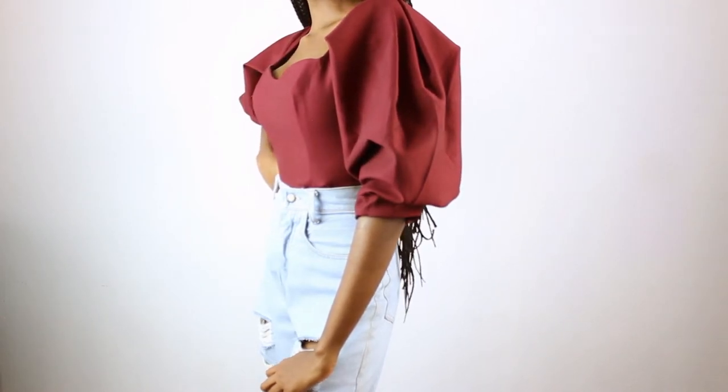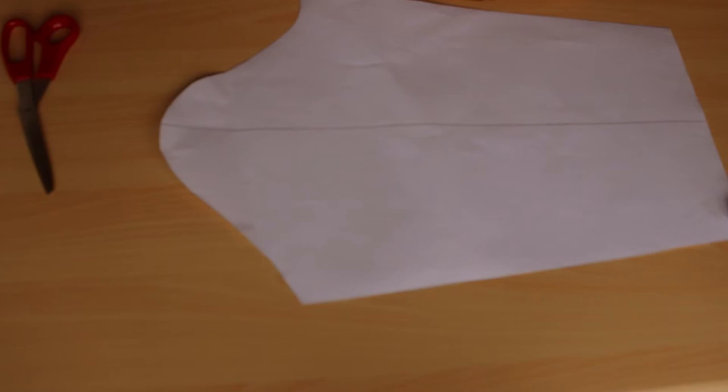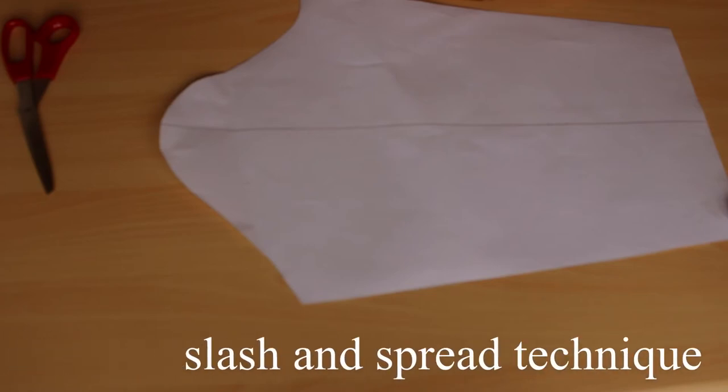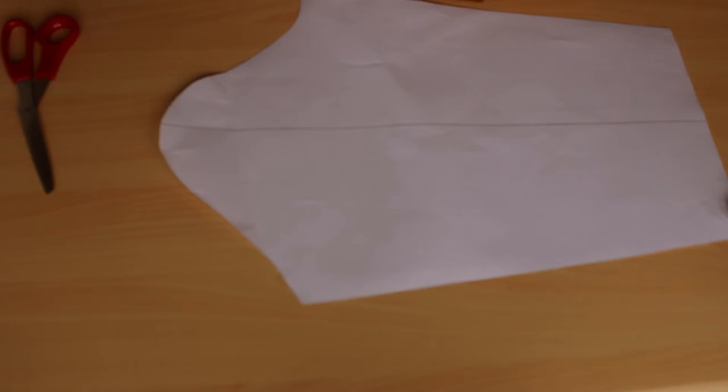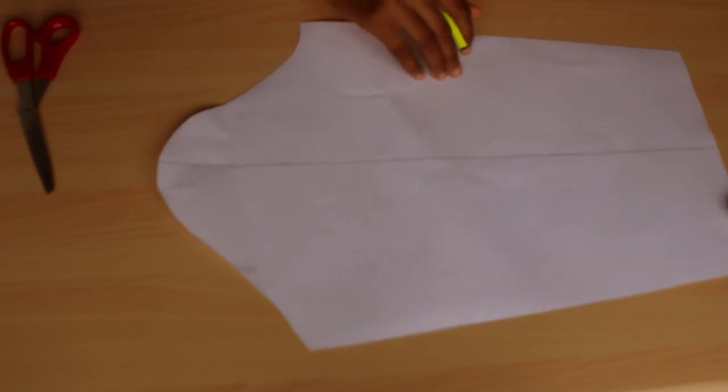This is my basic sleeve pattern. What I'm going to use is the slash and spread technique, which is basically a technique in which you cut open your pattern and spread it in order to create fullness. I'm going to be using this technique to create fullness in this pattern and to enlarge my original basic pattern.